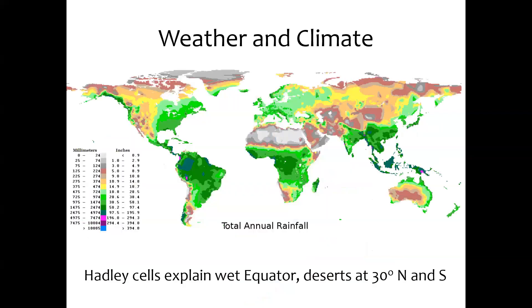Those Hadley cells explain that first pattern we saw - why the equator is wet where the sun is hitting most strongly. That air rises, rains out, and then moves up to about 30 degrees north, where it sinks and causes the big desert belts that we know in the Sahara, in Western Asia, in Australia, and in part of the American Southwest.